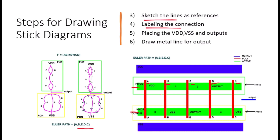Once your connections are labeled, place the VDD and VSS (ground) lines at the top and bottom of the diagram respectively. The output node should be placed between the pMOS and nMOS transistors where the final connection occurs. In our example, VDD is placed along the top of the pMOS transistors, VSS is placed along the bottom of the nMOS transistors, and the output connects the final node of the circuit.